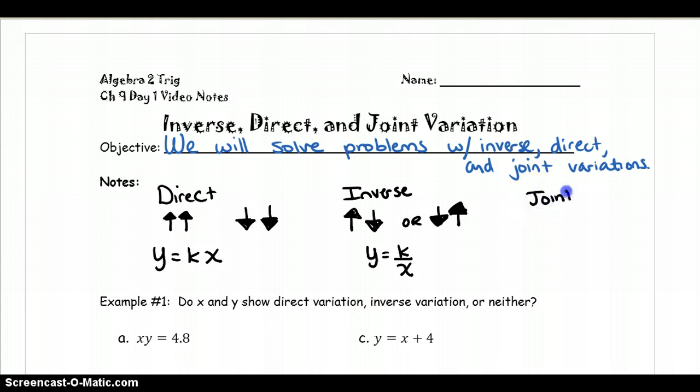The last kind of relationship we have is a joint relationship, and that is similar to direct. Now we have more than one variable. So as one thing is increasing, two other behaviors might also be increasing with it. Or as one thing is decreasing, the other two behaviors are decreasing with it. So we represent that by y equals k x times z, where x and z represent the other two factors that are either increasing or decreasing with our y value.